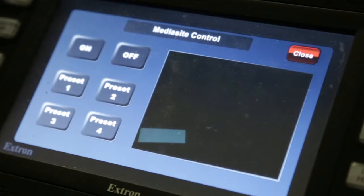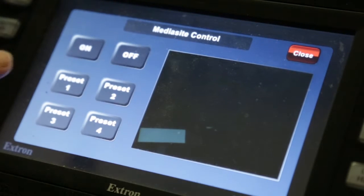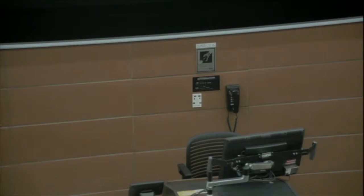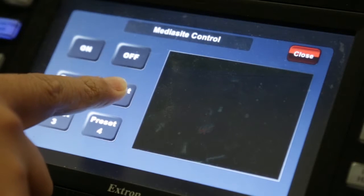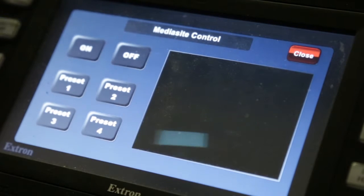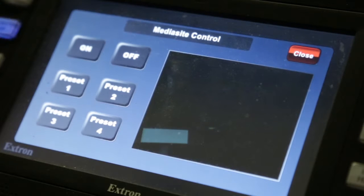The Mediasite classroom has four different view presets. Preset 1 is a view of the podium. Preset 2 is a view of the document camera table. Preset 3 is a view of the document camera table and the podium. And Preset 4 is a wide shot of the front of the classroom.